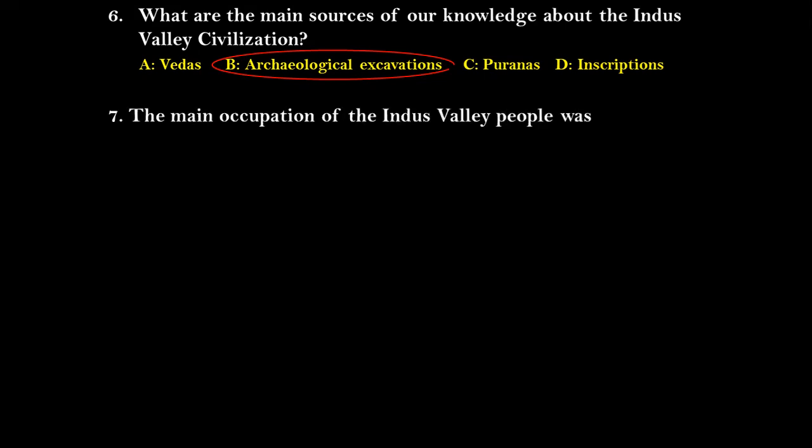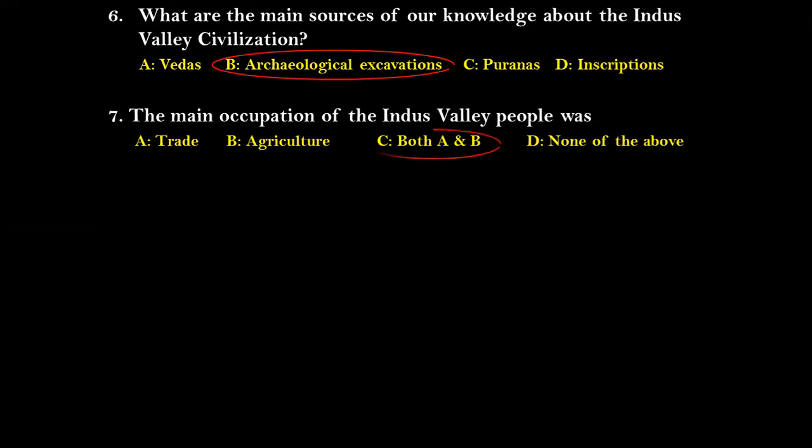Question seven: The main occupation of the Indus Valley people was — trade, agriculture, both A and B, or none of the above. The right answer is both A and B. The main occupation was agriculture, but they also had a trade relationship with other civilizations.